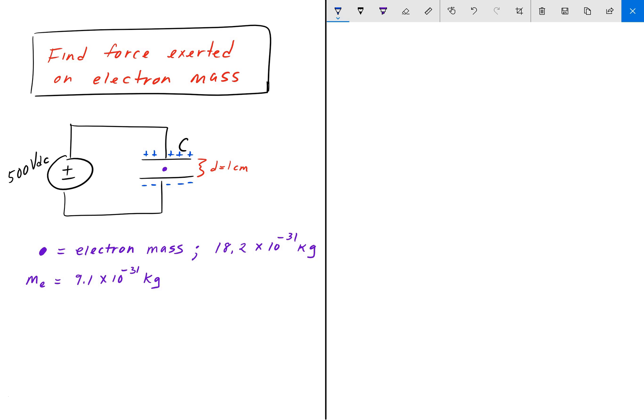We're asked to find the force exerted on the electron mass. Lastly, we're given that the mass of one electron is 9.1 times 10 to the negative 31 kilograms. So as always, pause the video, give it a shot, and we'll go over the answer in a bit.